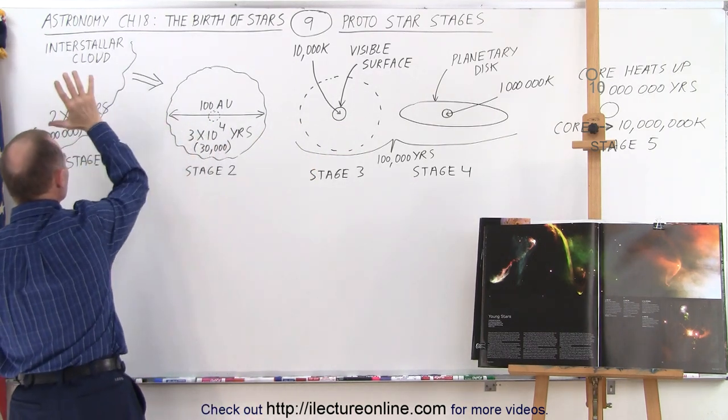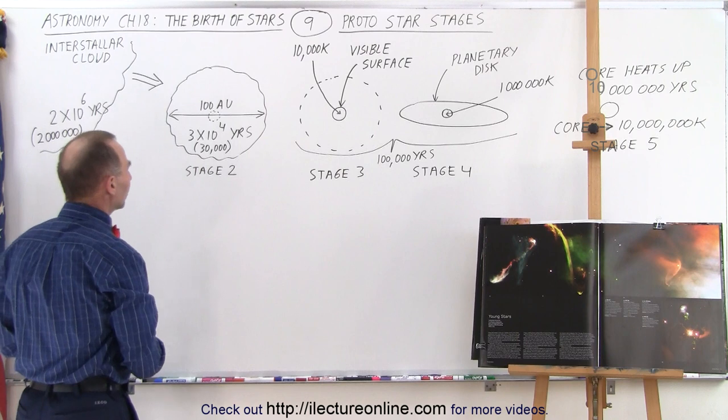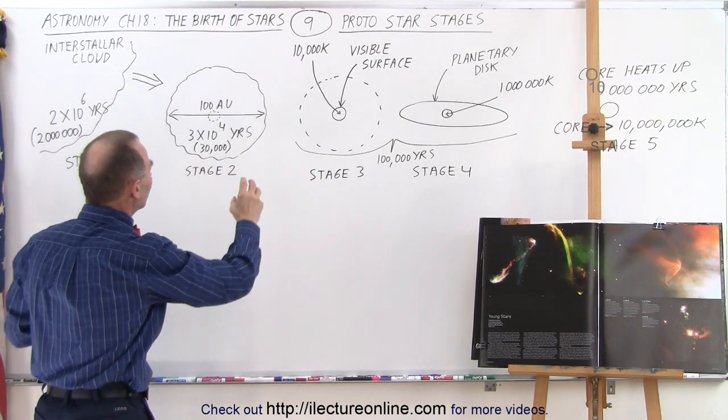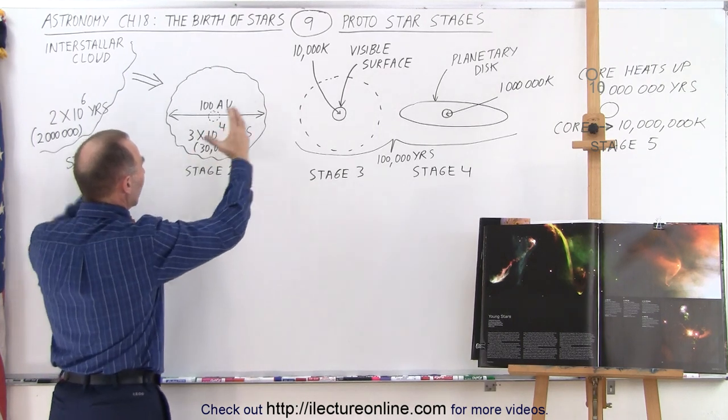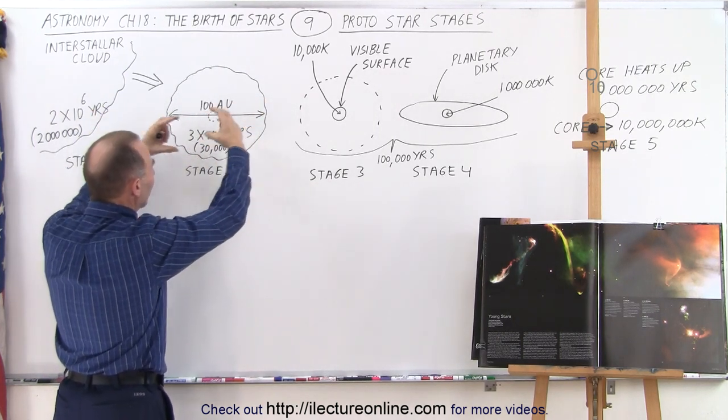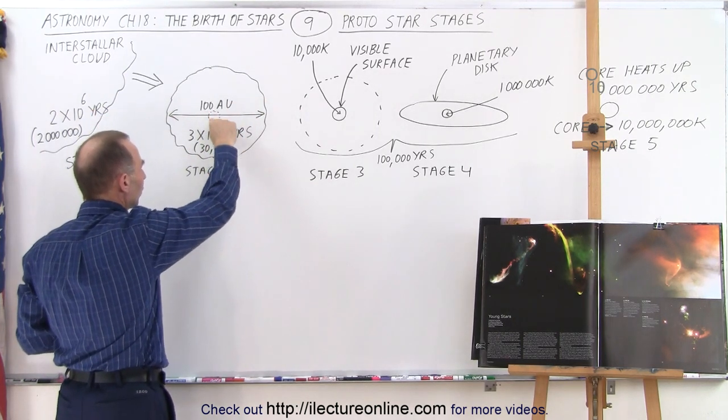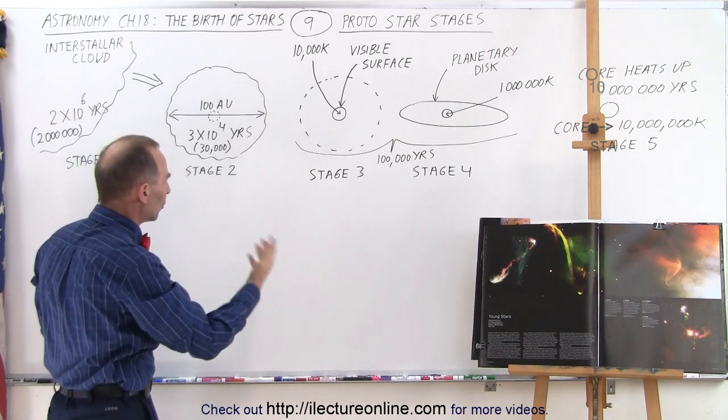So we call that stage one, the initial collapse of the molecular cloud. Essentially at that point you have something in the center that has a much greater density than the rest of the cloud. Things tend to fall into it gravitationally, slowly building up what will become the protostar and eventually the real star.